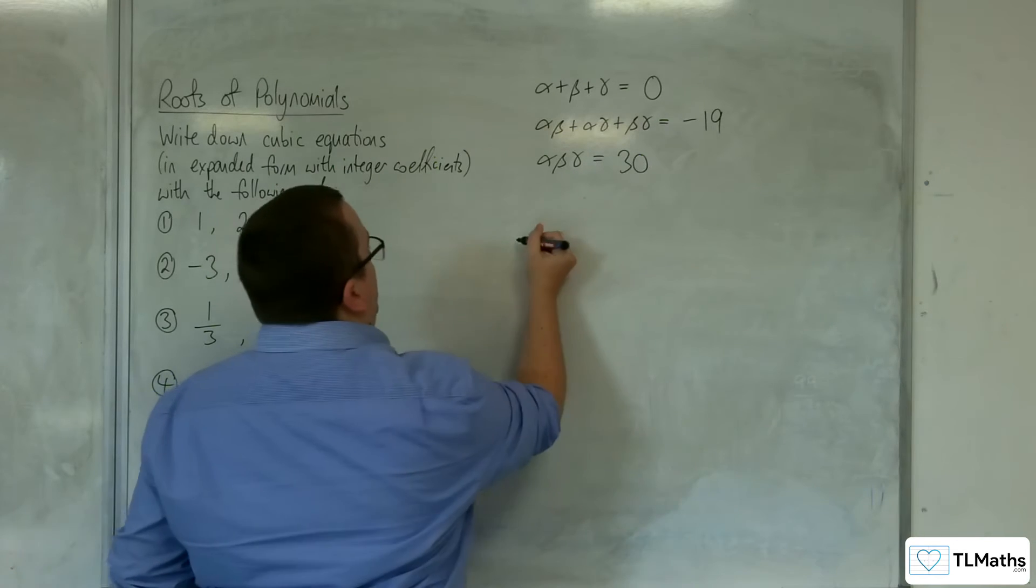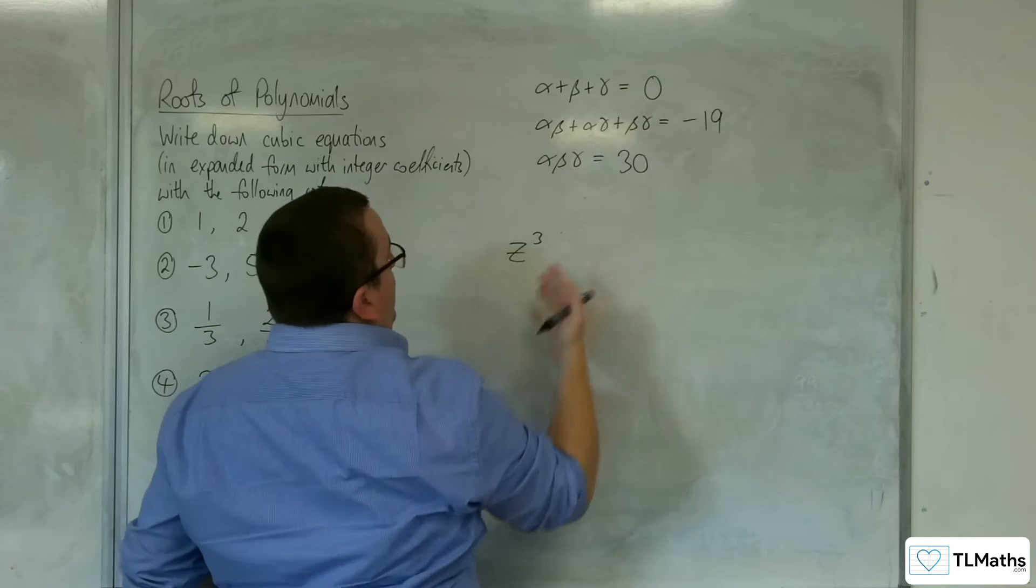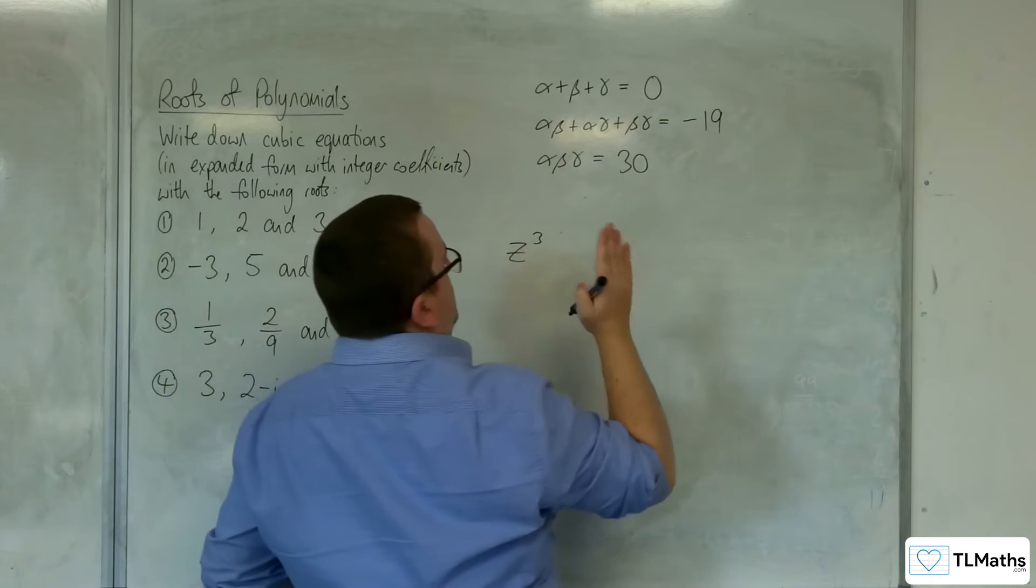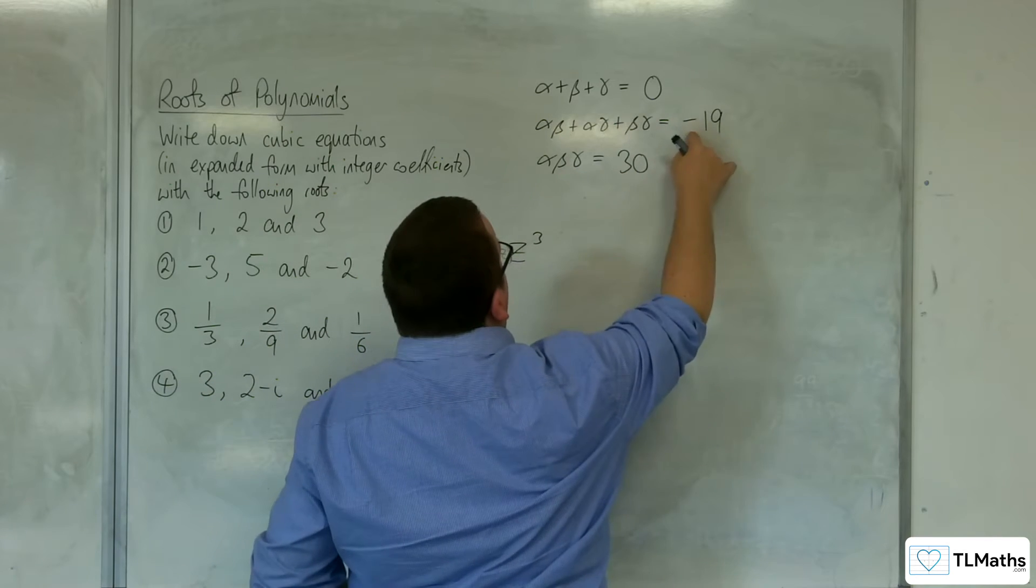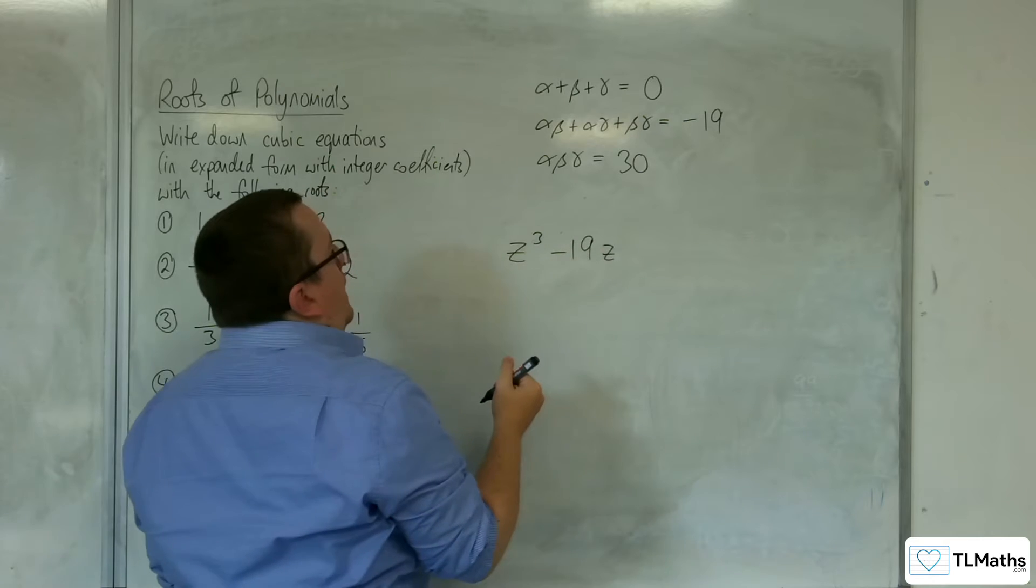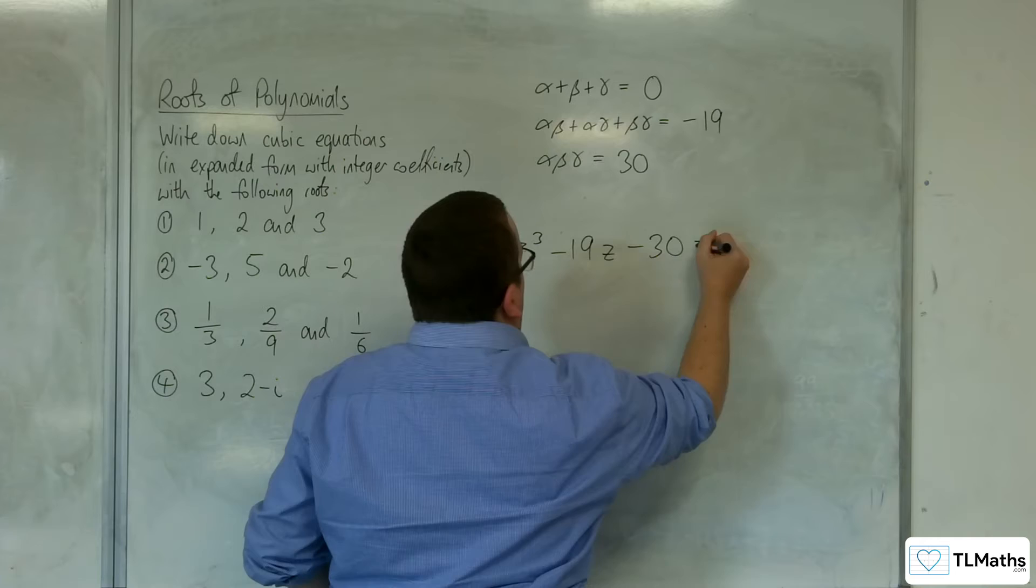So with that information, we must have z cubed take away 0z squared, which we won't bother writing down, plus negative 19 times z, then take away the 30, equals 0.